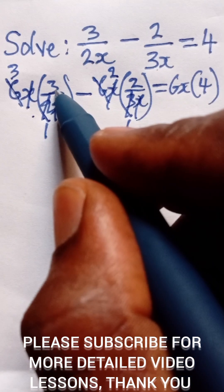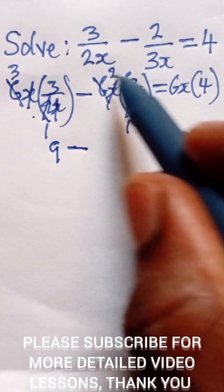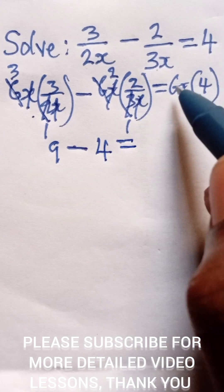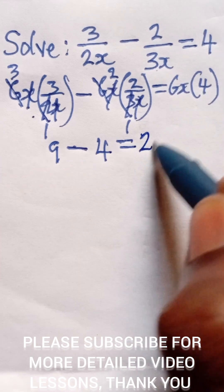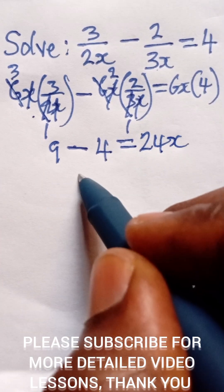by 4, which gives us 24x. So 9 minus 4 is 5, and that equals 24x. We can now divide both sides by 24.